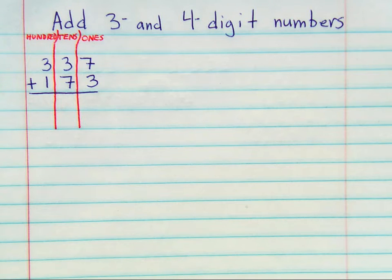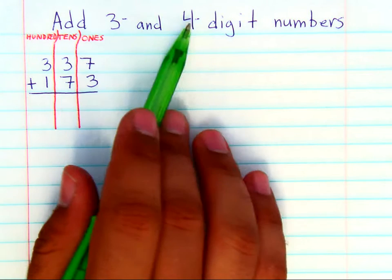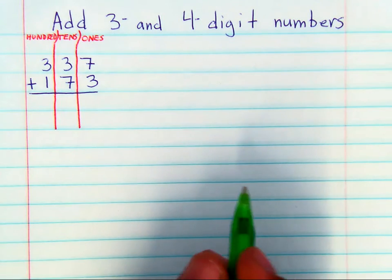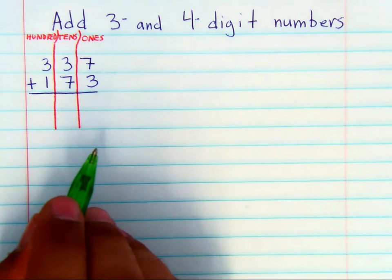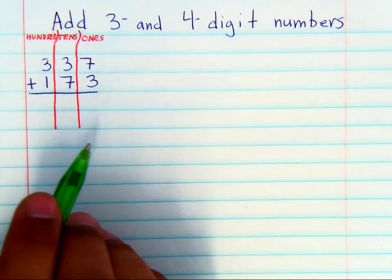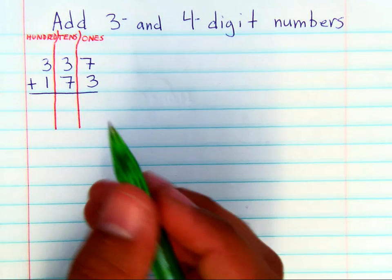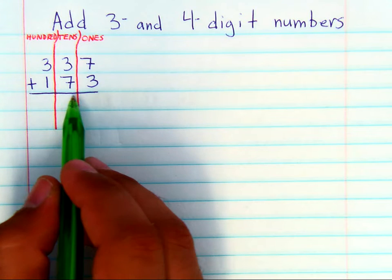Today we talked about adding three and four digit numbers. Now today we're talking about a particular strategy where we don't draw models, we don't do mental math, instead we're focusing on the standard algorithm.